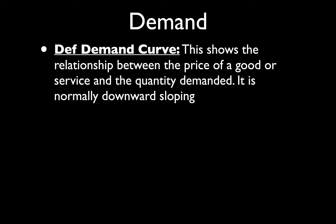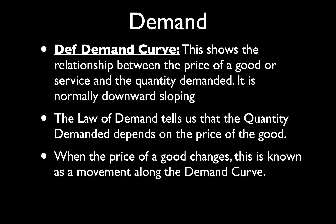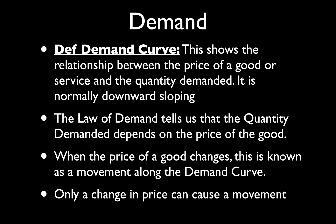Now let's talk about what the demand curve shows: the relationship between the price of a good or service and the quantity that is bought. It is normally downward sloping, and the downward sloping part gives us the law of demand. As the price changes, people change the amount they buy — as price rises people buy less, as price falls people buy more. When price changes, we refer to this as a movement along the demand curve. Only a change in price can cause a movement; anything else that affects the amount people buy is called a shift, which will be covered in the next video.